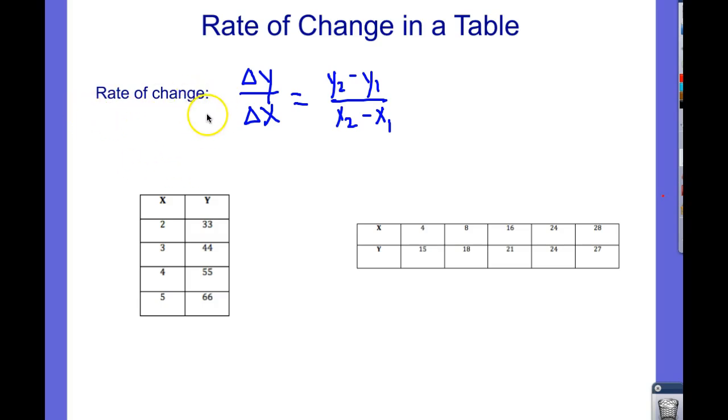So of course the rate of change, as we talked about earlier, is the change in y over the change in x. This is delta, means change in. Change in y over change in x. So we can take the second y value minus the first to get my change in y. The second x value minus the first to get my change in x.